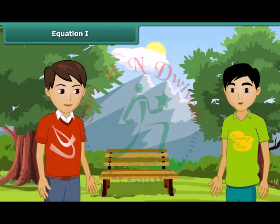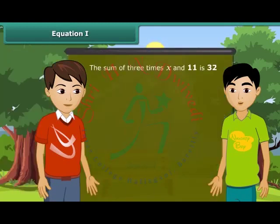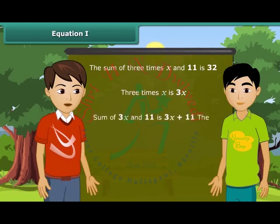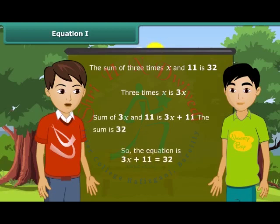Now I will tell you a statement. You have to change it into an equation. Are you ready? Yes. The sum of 3 times x and 11 is 32. 3 times x is 3x. Sum of 3x and 11 is 3x plus 11. The sum is 32. So the equation is 3x plus 11 is equal to 32.